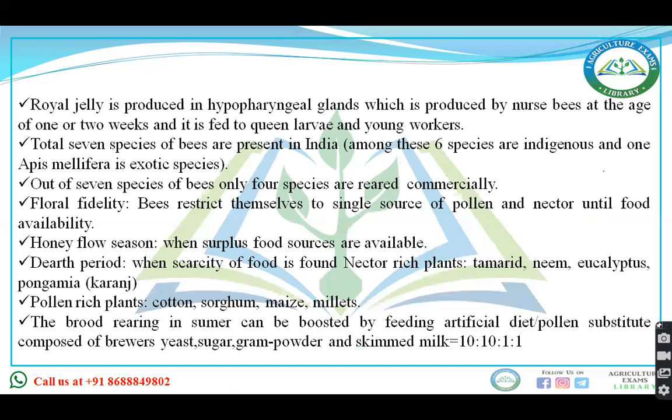Royal jelly is produced by nursery bees when they are one to two weeks of age, and it is used to feed the queen larvae or young workers. In total, seven species of bees are present in India. Among these, six are indigenous and one is exotic — that is Apis mellifera. Out of these seven, only four are commercially reared.